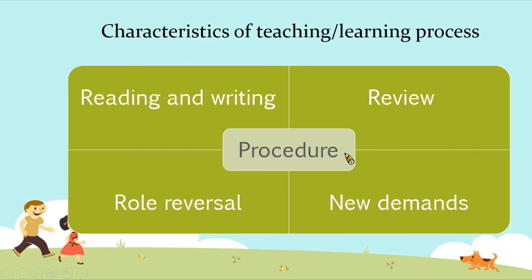Let's look at the characteristics of the teaching-learning process. First, the teacher reviews what students have learned before. Then the teacher gives students some new commands, and students do TPR with the teacher, moving their bodies to remember the new commands. The teacher conducts role reversal with students — when students are familiar with the new commands, the teacher says a command and students perform the movement to show they understand. In the last stage, students begin to read and write.